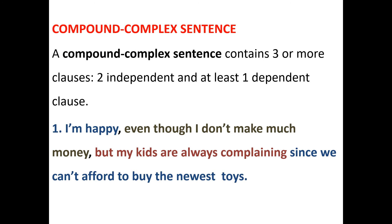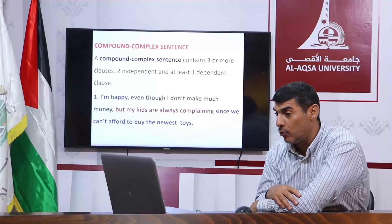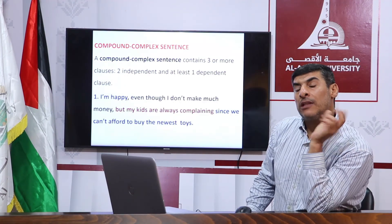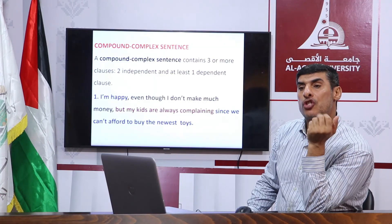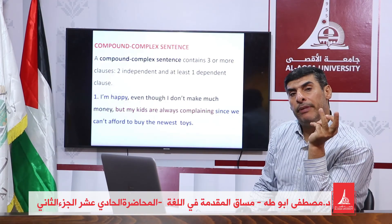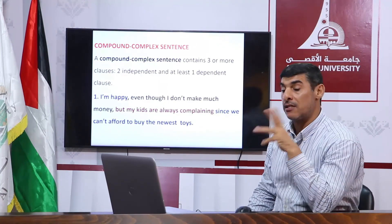Now we move to the last point: the compound complex sentence. As I mentioned at the beginning, syntactic rules allow us to complicate the sentence as much as grammar allows. This depends on our semantic knowledge and linguistic competence — our deep or surface knowledge of language. A compound complex sentence must have a coordinating conjunction like 'and,' 'but,' or 'so,' and it must also contain a subordinating conjunction like 'because,' 'although,' 'when,' 'after,' 'as soon as,' 'until,' and so on.